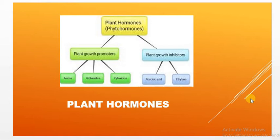We can divide these plant hormones into two categories: hormones which promote growth, called plant growth promoters, and hormones which inhibit plant growth, called plant growth inhibitors. There are specific hormones which control the growth of the plant. The growth promoters are auxins, gibberellins, and cytokinins. The plant growth inhibitors are abscisic acid and ethylene.